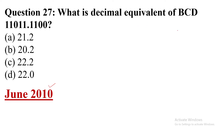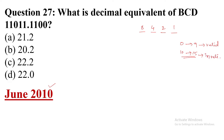BCD stands for Binary Coded Decimal, and each digit takes 4 bits with weights 1, 2, 4, 8. In the decimal number system, valid BCD codes are 0 to 9. If any code falls between 10 to 15, it is invalid. To make it valid, add 6 — that is, add binary 0110 to the invalid number.